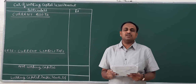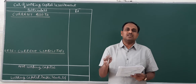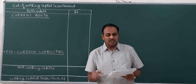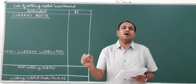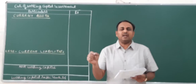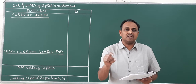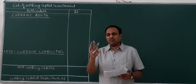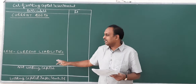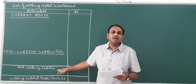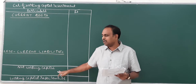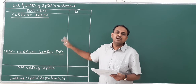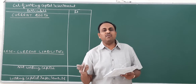Students, we have completed the operating cycle problems connected to the working capital chapter. Now another part of the working capital chapter is the calculation of working capital requirement — how much money is required as working capital for a business. I have sent you the PPDs; in the PPDs you have a pro forma that is simple to understand. Current assets minus current liabilities is called net working capital, and if there is a contingency allowance, that is added to get the working capital requirement.